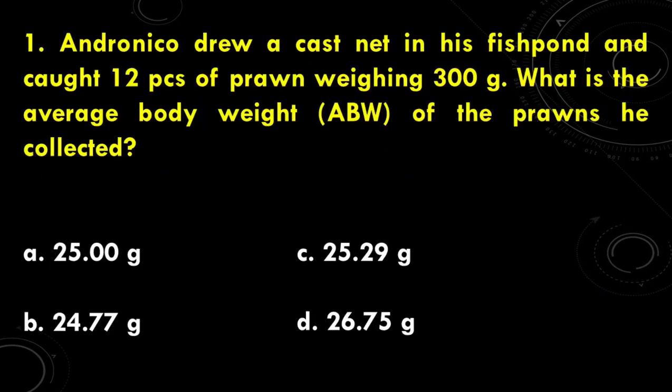This is our first question. Andraniko drew a cast net in his fish pond and caught 12 pieces of prawn weighing 300 grams. What is the average body weight or ABW of the prawns he collected? The choices are: A. 25 grams, B. 24.77 grams, C. 25.29 grams, and D. 26.75 grams. The answer is A, 25 grams.